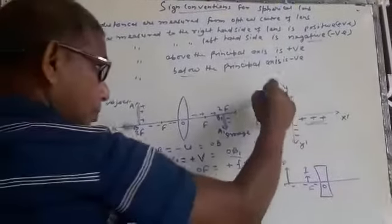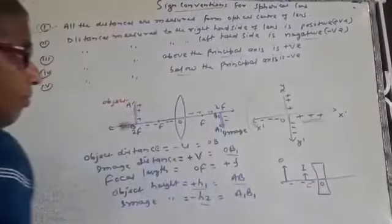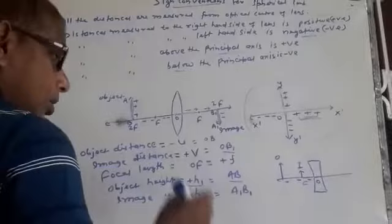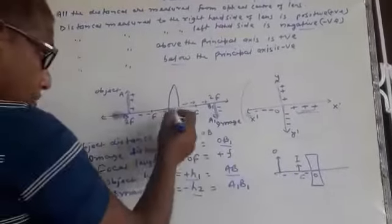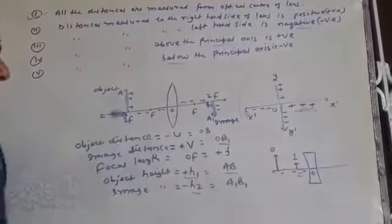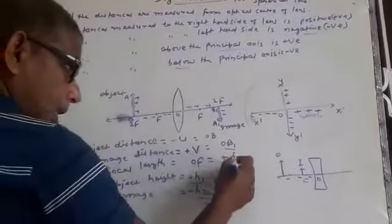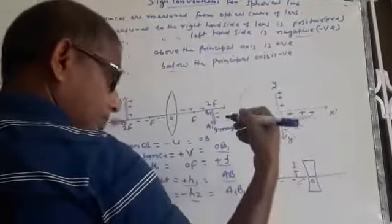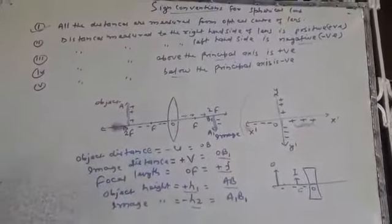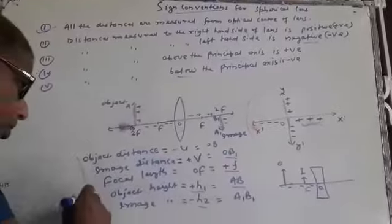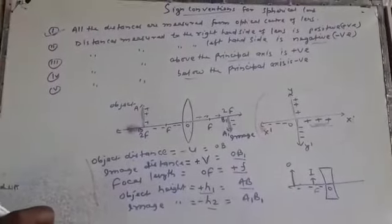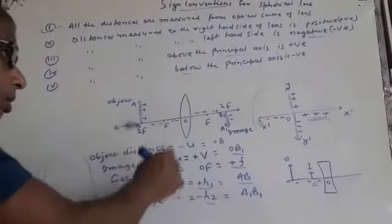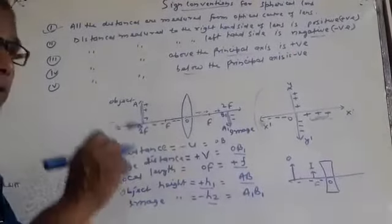So you have to keep in mind which distances are positive or negative to solve the numerical questions. From these two figures, it is clear that a convex lens has a positive focus and a concave lens has a negative focus. In my next class, I will explain the mirror formula and we will use this sign convention in the mirror formula.